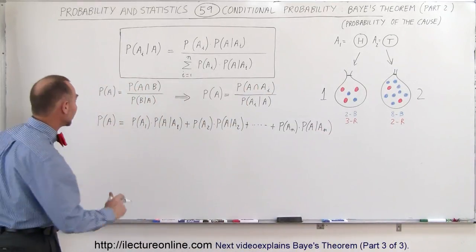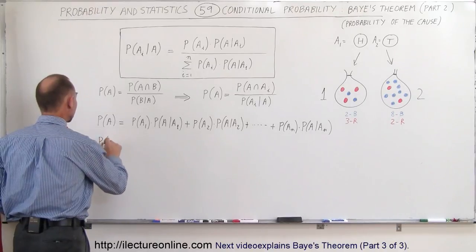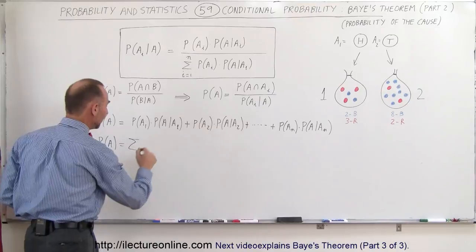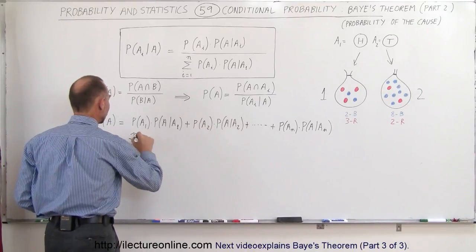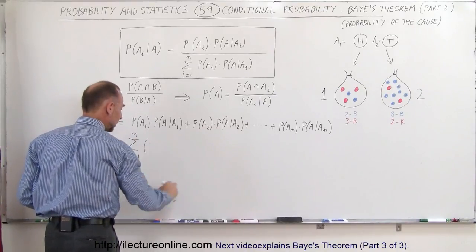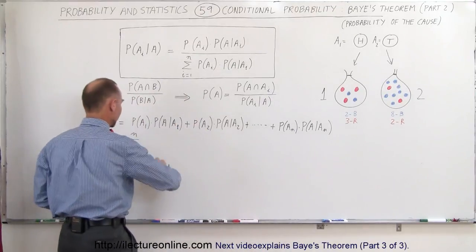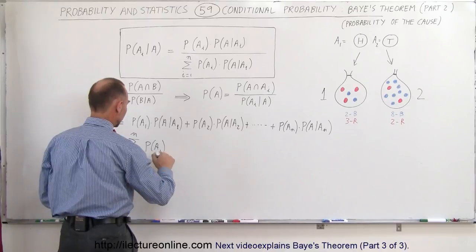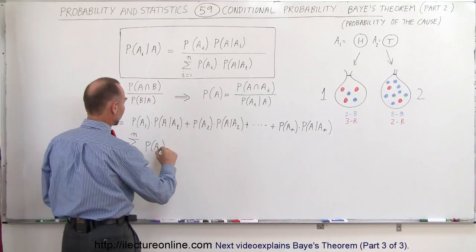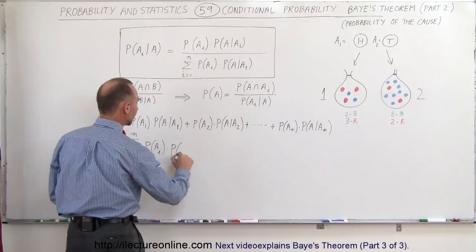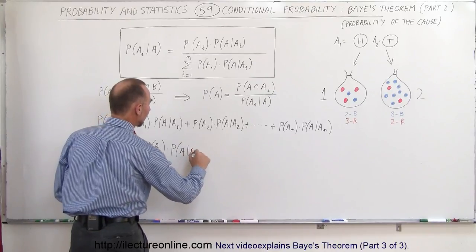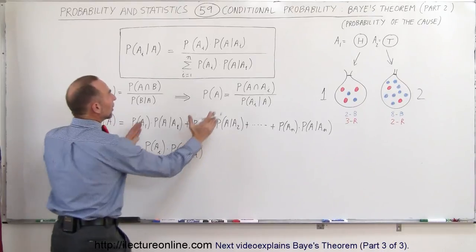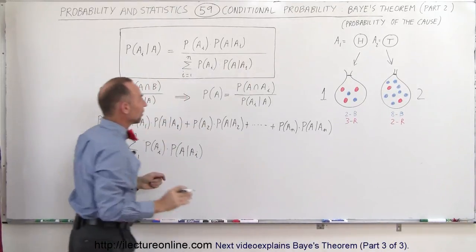Also realize that we can write this in a more general form: the probability that A will occur is equal to the sum from i equals 1 to n of the probability that A sub i has occurred, times the probability that A will occur provided A sub i has occurred. Notice this portion right here appears in the bottom portion of Bayes' Theorem.